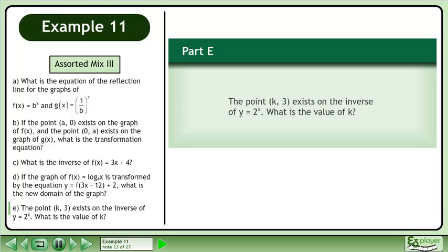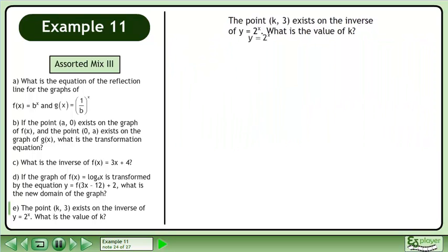Now we'll move on to part e. The point (k, 3) exists on the inverse of y equals 2 to the power of x. What is the value of k? Rewrite y equals 2 to the power of x. To get the inverse, swap x and y.